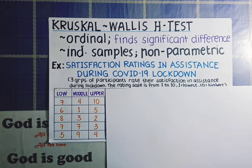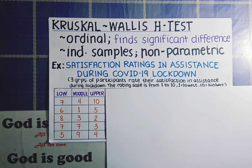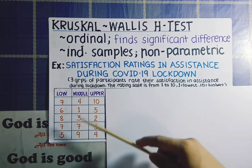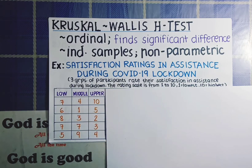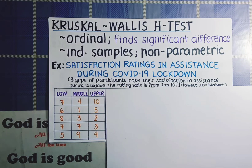Here, three groups of participants rate their satisfaction on the said matter. The rating scale is from 1 to 10, with 1 being the lowest and 10 being the highest. Our groups here are the lower class, middle class, and upper class, and each group has five participants, giving us 15 participants in total. Now, let's assume that our data are not normally distributed.